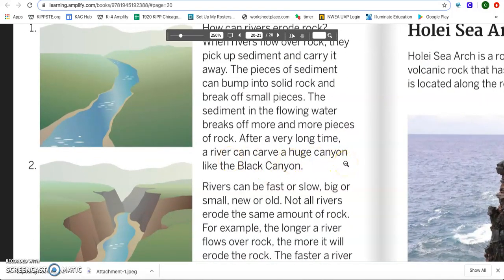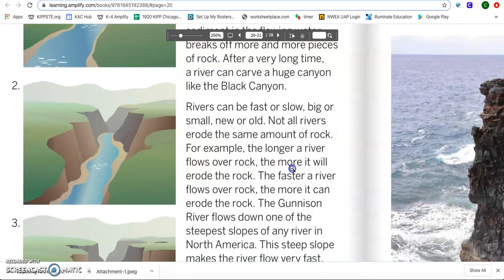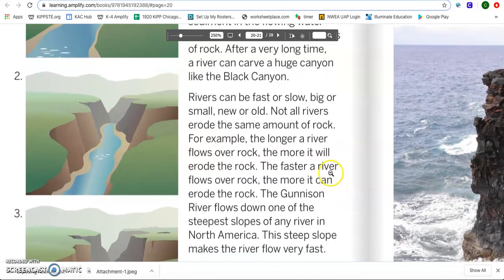Rivers can be fast or slow, big or small, new or old. Not all rivers erode the same amount of rock. For example, the longer a river flows over rock, the more it will erode the rock. The faster a river flows over rock, the more it can erode the rock.